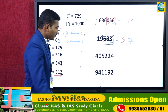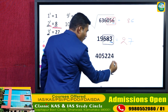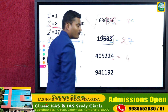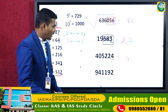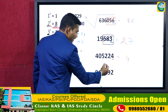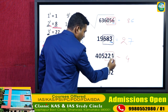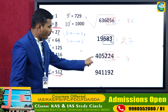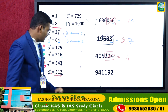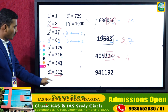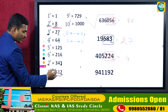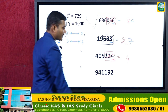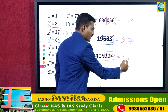Third cube root example: unit digit is 4, so the answer's unit digit is also 4. Neglect the last three digits — 405 is remaining. It lies between 343 (7³) and 512 (8³), so the previous value is 7. The answer is 74.